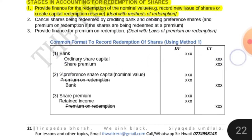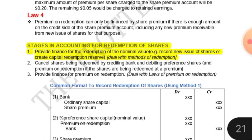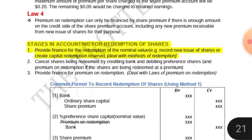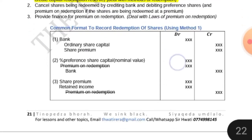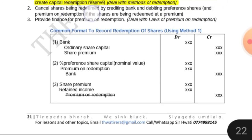We are recording new issue of shares, since method one involves a new issue of shares. We debit bank because the bank account is receiving money, and the capital account and share premium account are giving money to the bank account. Then on stage number two, we want to cancel the shares being redeemed — in other words, we want to debit the shares being redeemed.